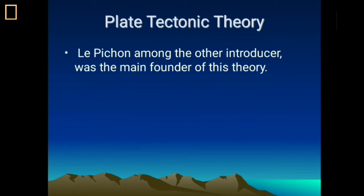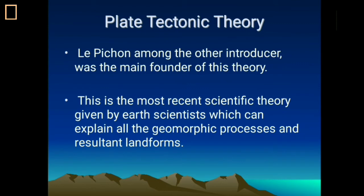According to the plate tectonic theory, the concept was developed during the 1960s. The most popular introducer was X. Lee P. Cho, who first coined the term 'plate tectonics,' and another contributor was Wilson. Though about 20 scientists contributed to the formation of the plate tectonic theory, this is the most scientific theory by which we can explain not only fold mountains but the entire topography — all the landforms we see over the earth's surface. That is why it is the latest and most comprehensive scientific theory for explaining any landforms on earth.